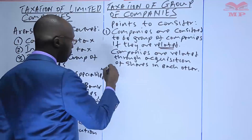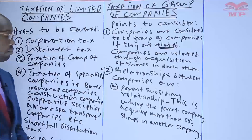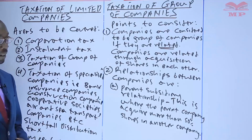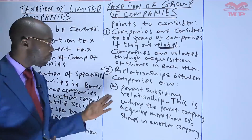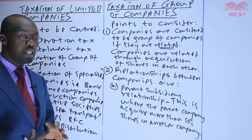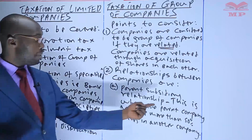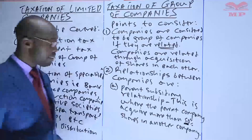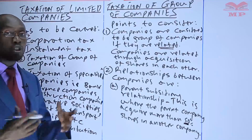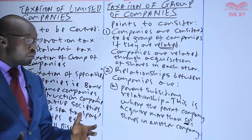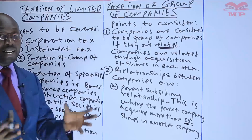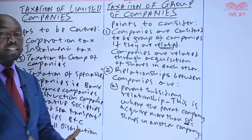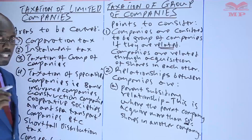Point number two is the relationship between companies. How can companies be related? The first type is called parent-subsidiary relationship. This is where the parent company acquires more than 50% shares in another company — so 51%, 52%, 60%, 80%, or 100%. The company whose shares have been acquired is called the subsidiary, and the company which has acquired shares is called the parent company.